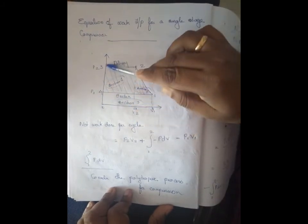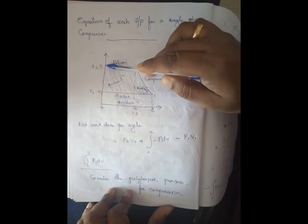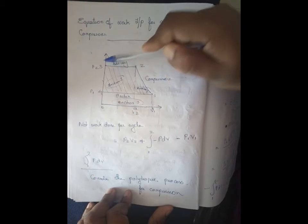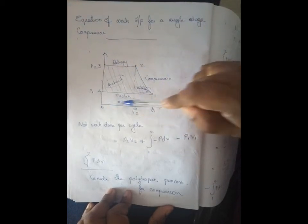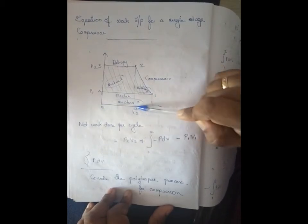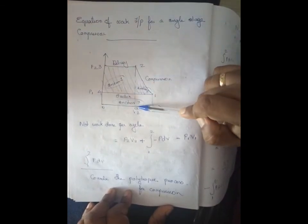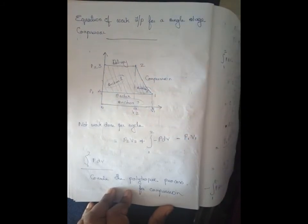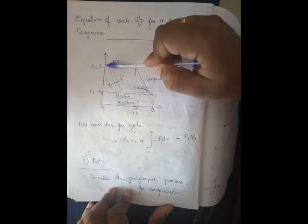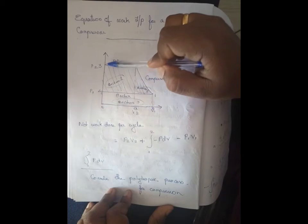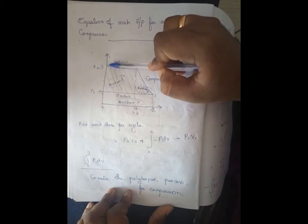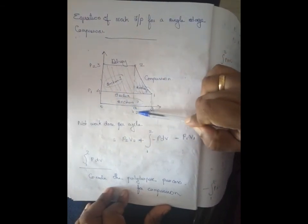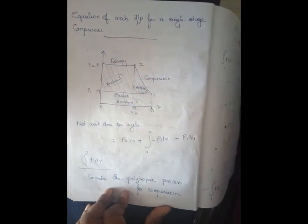The rectangle area is length into breadth. The length corresponds to P2, and the breadth corresponds to V2 along the X-axis (volume). Therefore, P2 into V2 gives Section 1 area. Section 1 is a rectangle with sides giving P2 times V2.